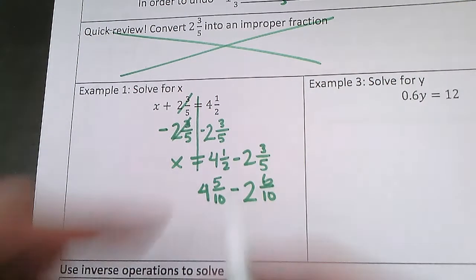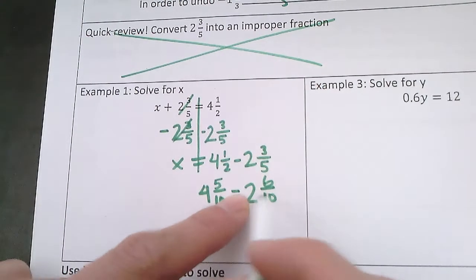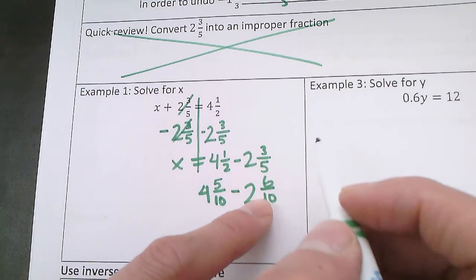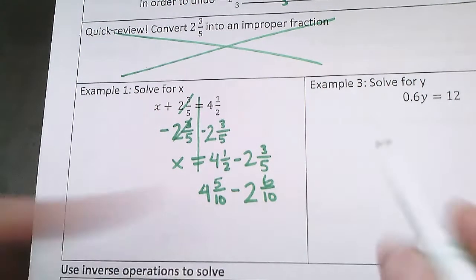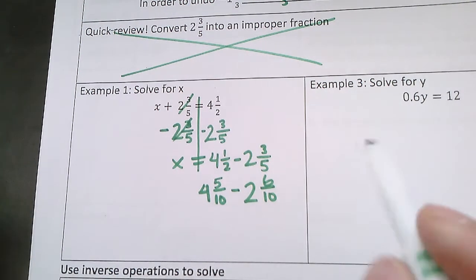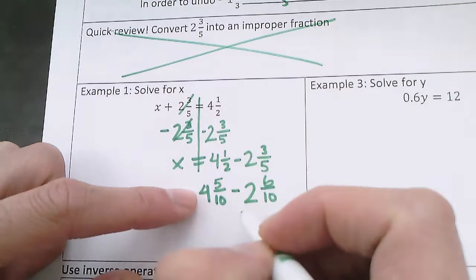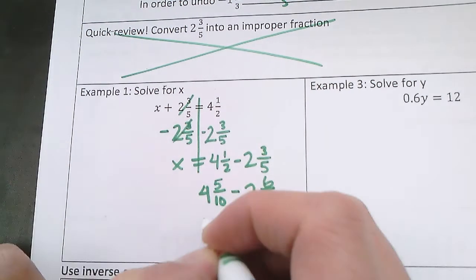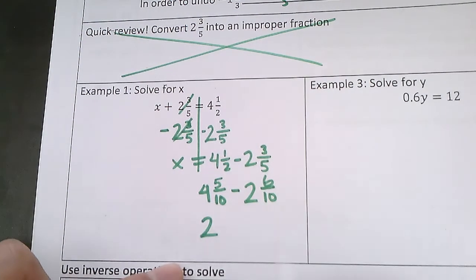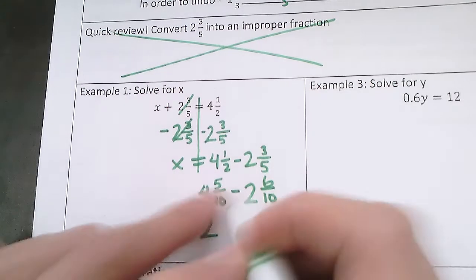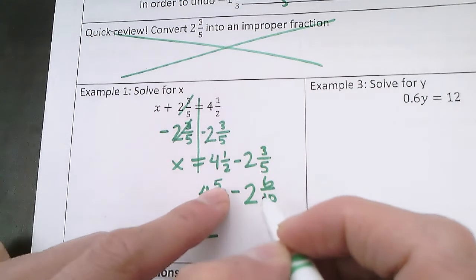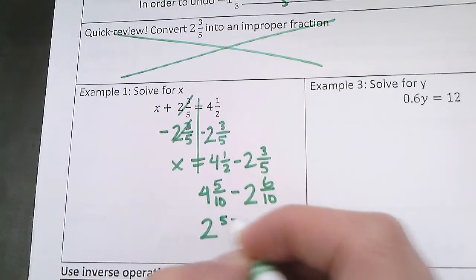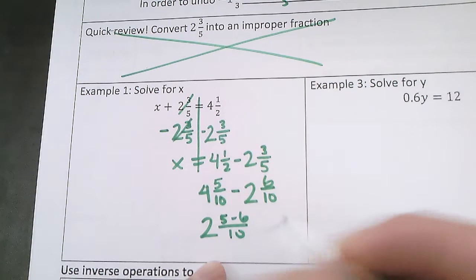All right, so now I have 4 and 5 tenths minus 2 and 6 tenths. I would start by subtracting the whole numbers. So 4 minus 2 is 2, and then I would have 5 minus 6. So 5 minus 6 over 10.